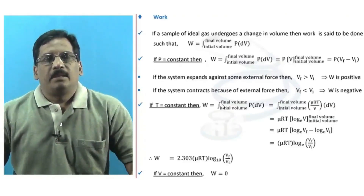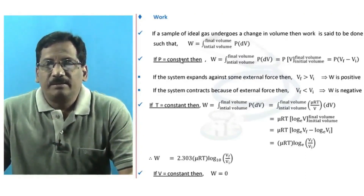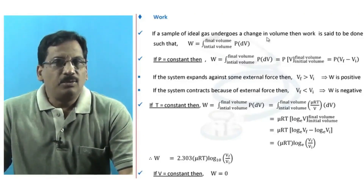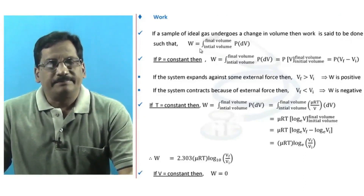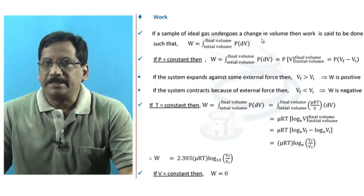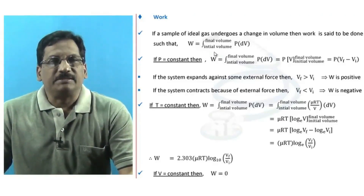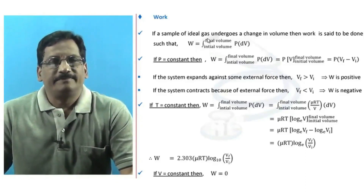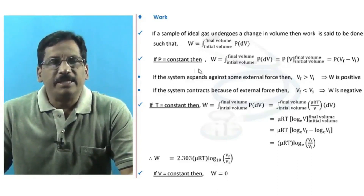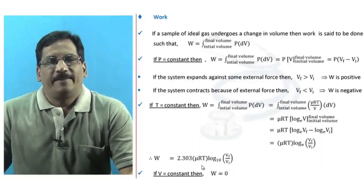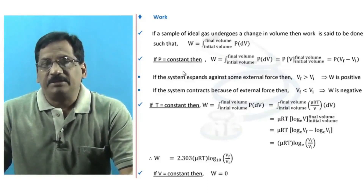Now let us understand the concept of work. If a sample of ideal gas undergoes a change in volume, then work is said to be done, such that W = ∫PdV, with limits from initial volume to final volume. This is the general expression for work done in the case of an ideal gas sample as its volume changes. We will calculate this work in three contexts: constant pressure, constant temperature, and constant volume.